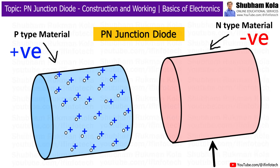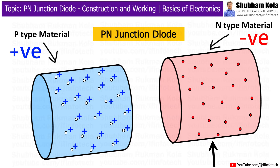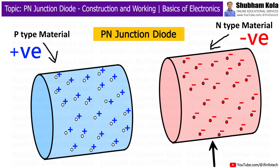N-Type Material: Think of a material that has a few extra electrons. These extra electrons can move around and carry a negative charge. This material is called N-Type Material because it has a negative nature.